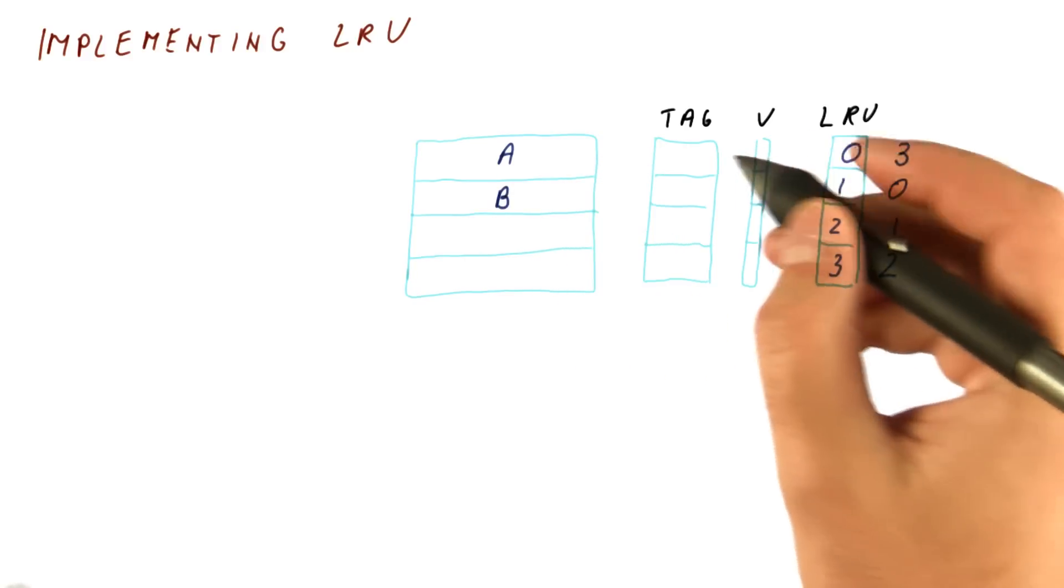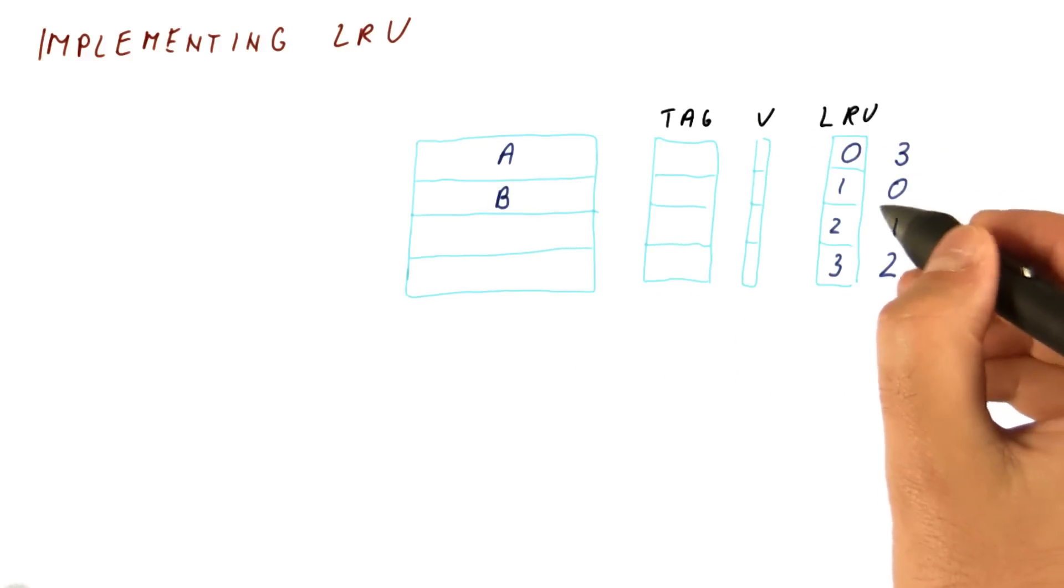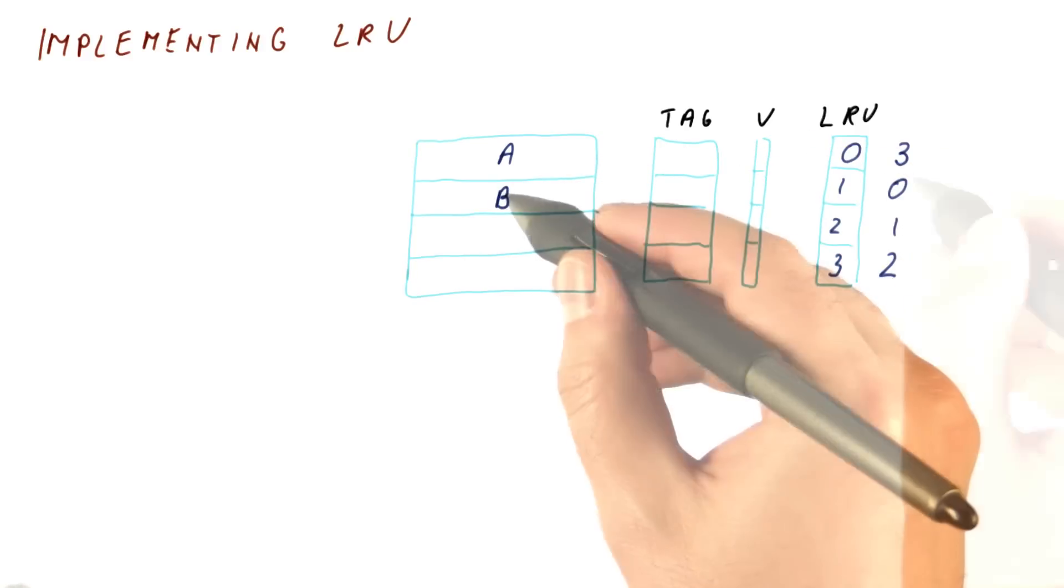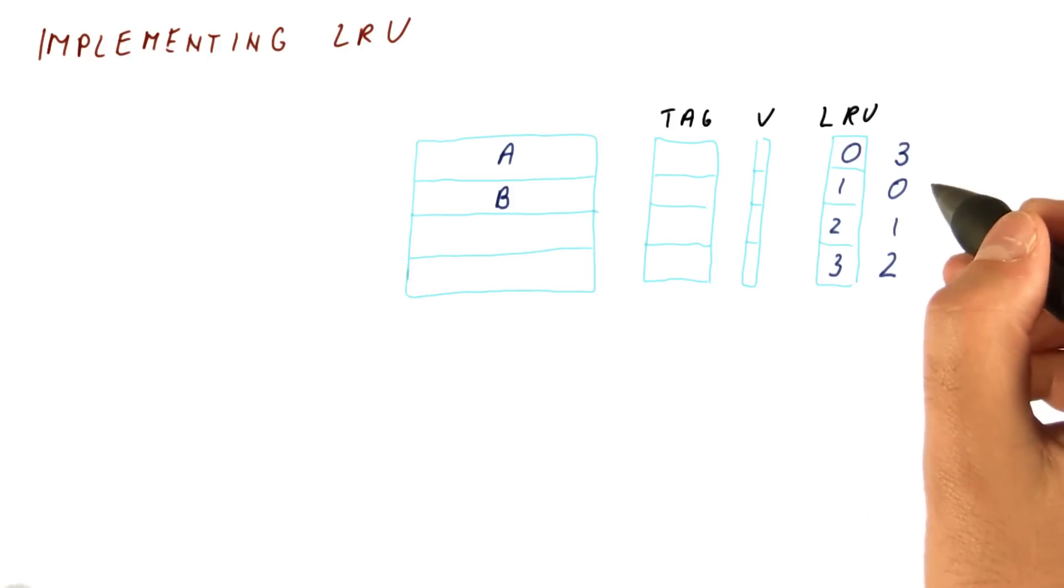And now, let's say that we access some block B. We put it here because the counter is 0 now here. When B is accessed after putting it here, that counter becomes 3. This one becomes 2, this one becomes 0, and this one becomes 1.